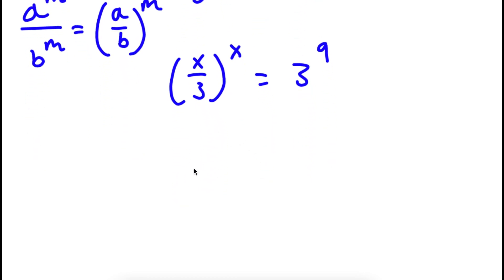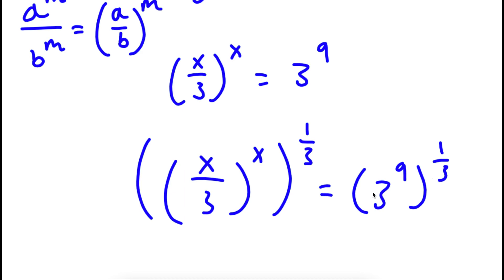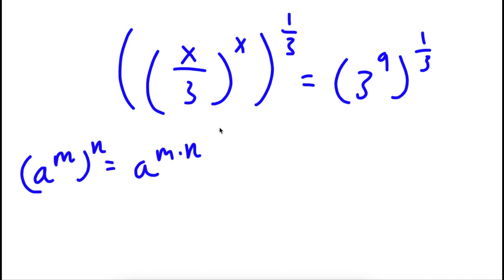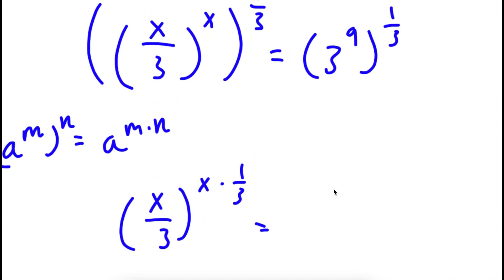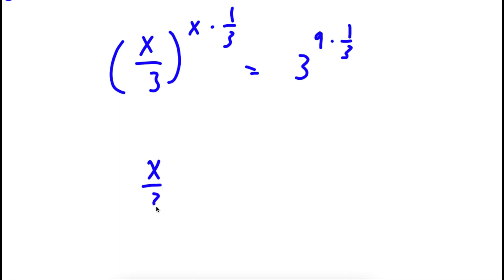This is equal to 3 to the power of 9. Now what I'm going to do is take the power of 1 third on both sides. So now I have x over 3 to the power of x, to the power of 1 over 3, is equal to 3 to the power of 9 to the power of 1 over 3. Using the rule a to the power of m to the power of n equals a to the power of m times n, this gives us x over 3 to the power of x over 3, equal to 3 to the power of 3.